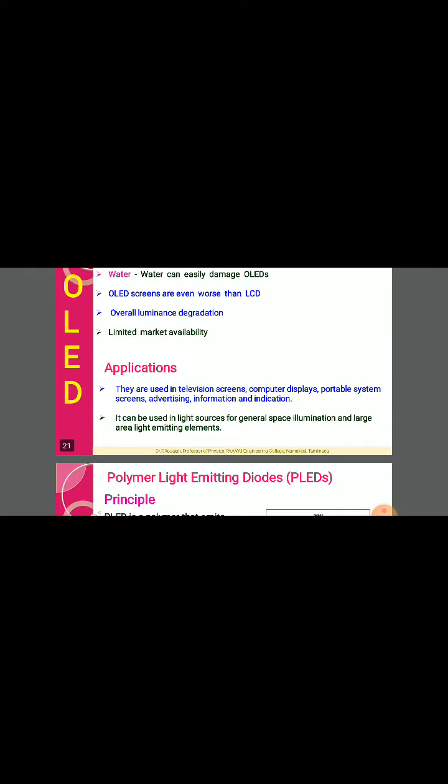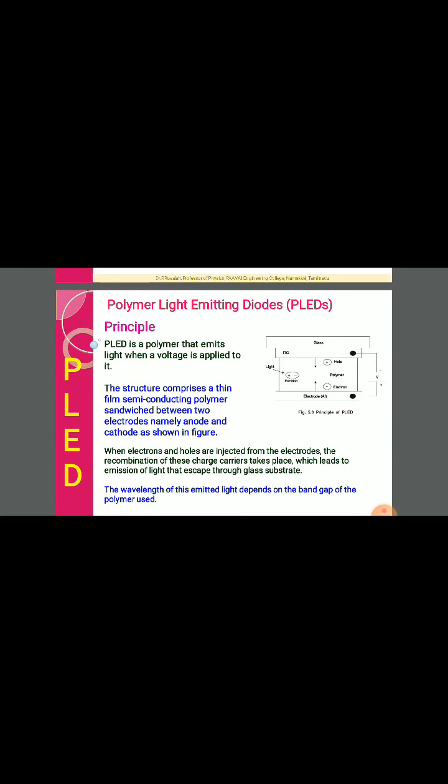Next, polymer light emitting diodes — PLED. This is one more advanced type. PLED is the polymer that emits light when voltage is applied to it. The structure comprises a thin film semiconducting polymer sandwiched between two electrodes, namely the cathode as one electrode, as we can see in the figure. The semiconducting polymer layer is placed in between the electrodes — that is the key difference.